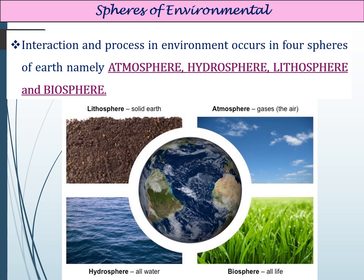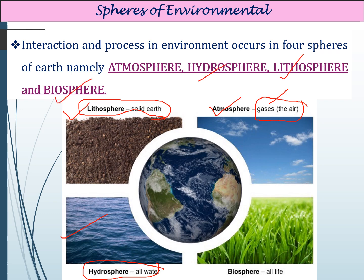Now, the spheres of the environment. The environment consists of four types of spheres, and all processes and interactions within the environment happen within these four spheres. The first is the atmosphere — the gases that surround the earth. Then the hydrosphere — all the water resources present on earth. Then the lithosphere — the solid earth above which all life forms and soils are present. Finally, the biosphere — all the organisms around us, also called the 'life sphere.'